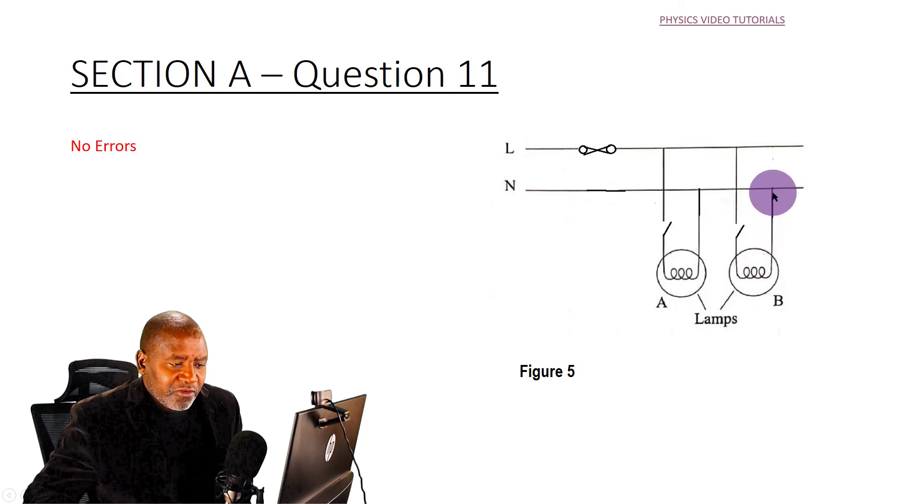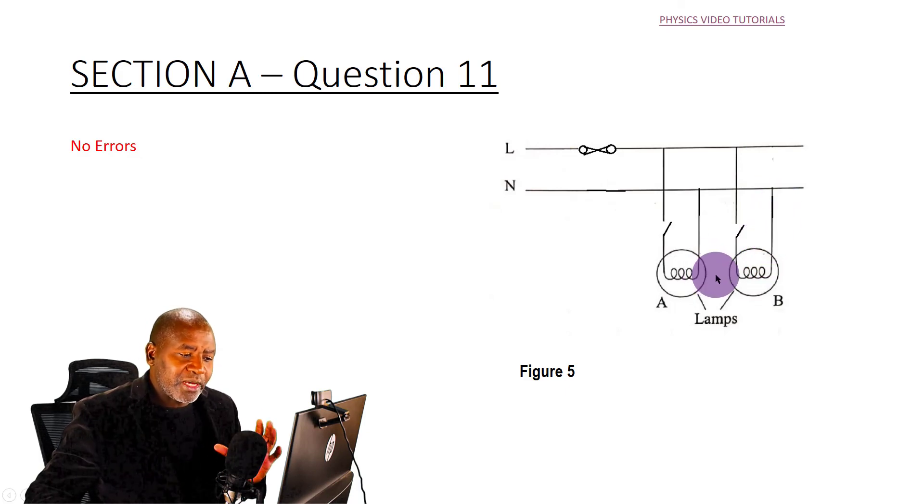And the other wire, instead of being connected to the live, is connected to the neutral. So this way, both lamps are connected correctly with the fuses and switches connected correctly.